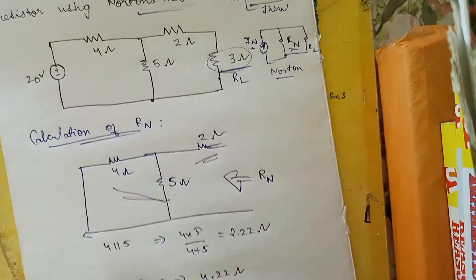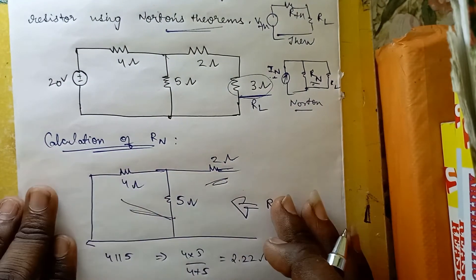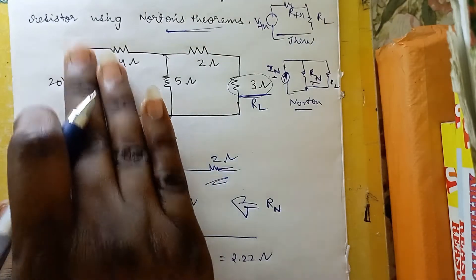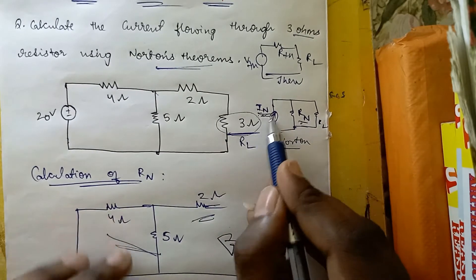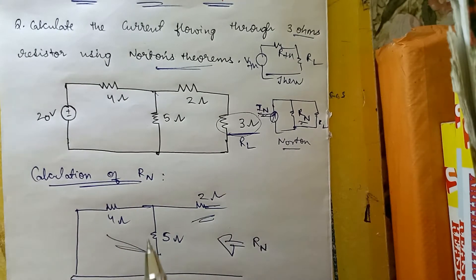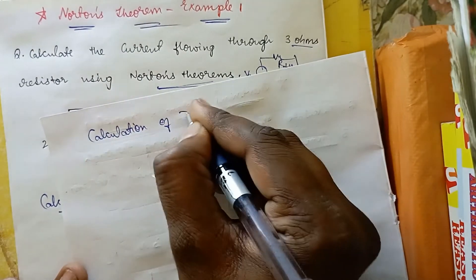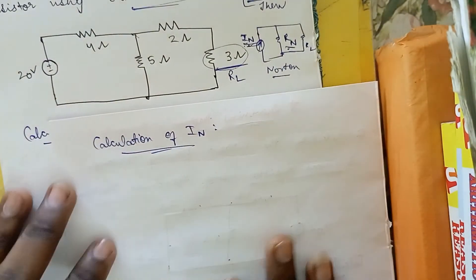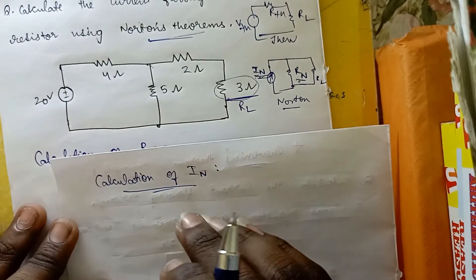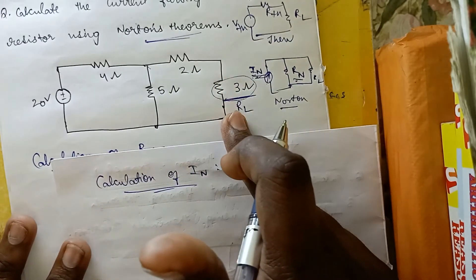Note that this Rn value of 4.22 ohms is the same as the Rth value calculated in Thevenin's theorem — the resistance calculation is identical. However, the major difference is that now we need to calculate In. For In, we short circuit the load resistance instead of open circuiting it.